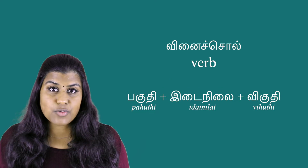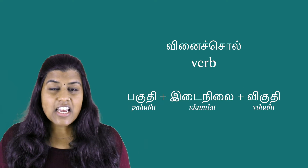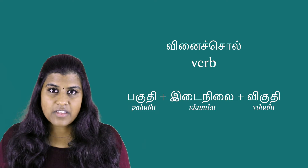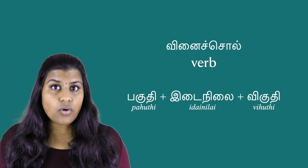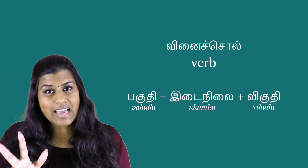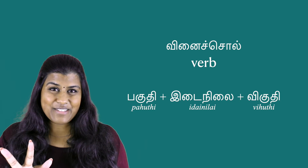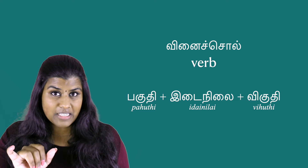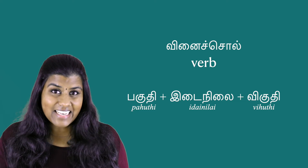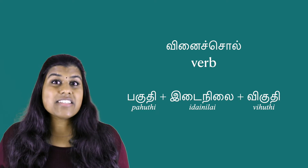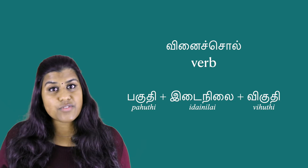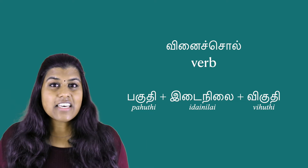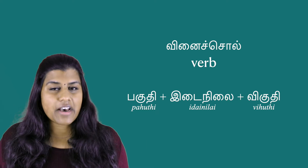Before we get started with the conjugation, let's look at the verb structure. In Tamil, a verb has at least three parts. One part shows the tense — whether it's past tense, present tense, or future tense. And another part shows the person.